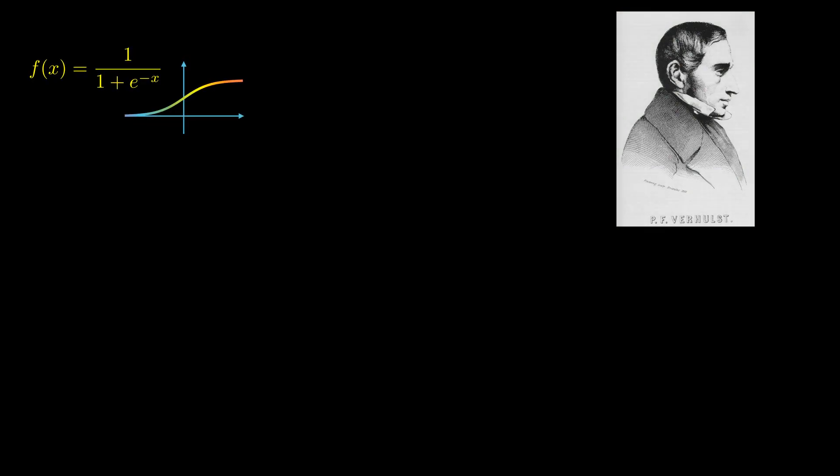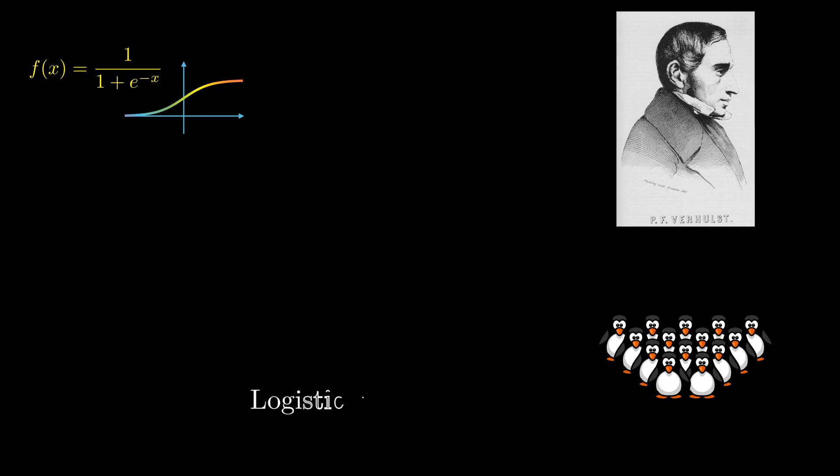It was originally proposed in 1838 by Belgian mathematician Pierre-Francois Verhulst to describe population growth. It then made its way into many other disciplines, including machine learning, where it spawned one of the most popular classification algorithms: logistic regression.